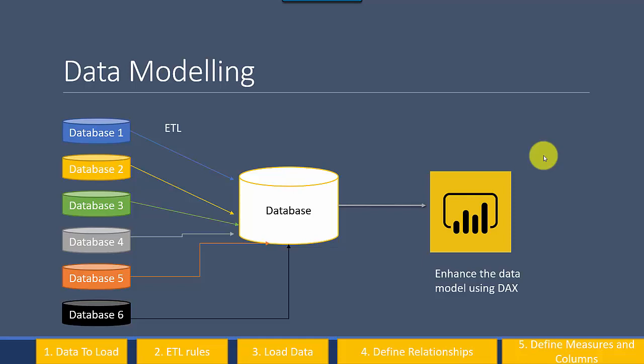Essentially, the data goes from the database directly into Power BI. So you've basically got data to load, then you've got ETL rules, and then you load the data which could be in the database or could be in the Power BI file. Once you load the data into the Power BI file, normally it would be a dimensional model.